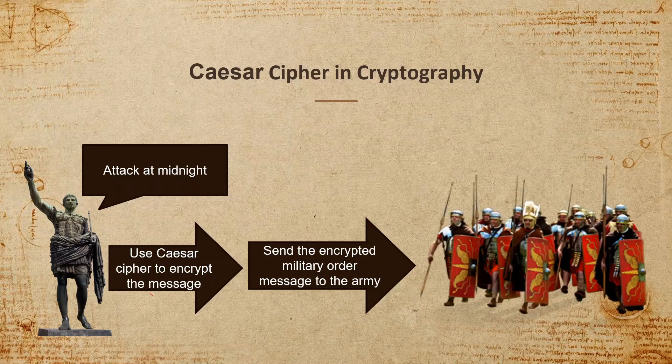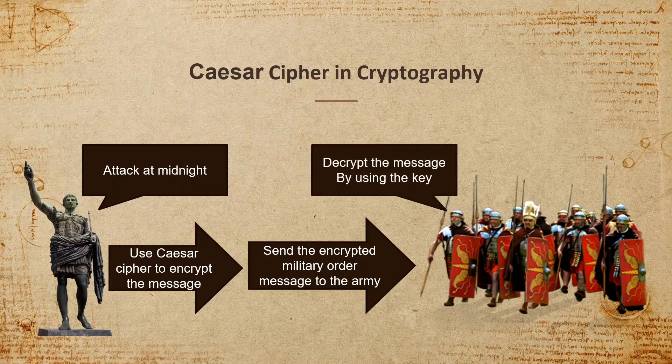On the other side, once the army receives the encrypted message, the generals or commanders already have the shift key provided by Julius Caesar. They arranged the shift key in advance for their secure communication, so the general will decrypt the message using the key and find out the attack time.